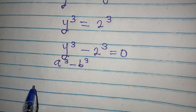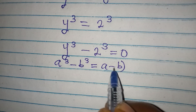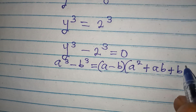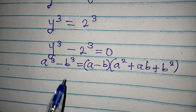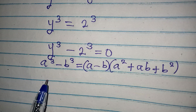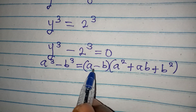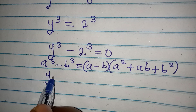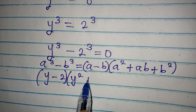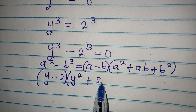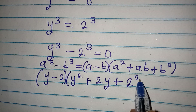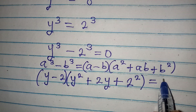Now, a³ - b³ factors as (a - b)(a² + ab + b²). We relate this to our expression where a = y and b = 2. So in place of (a - b) we get (y - 2), and the second bracket becomes y² + 2y + 2² — all equal to 0.